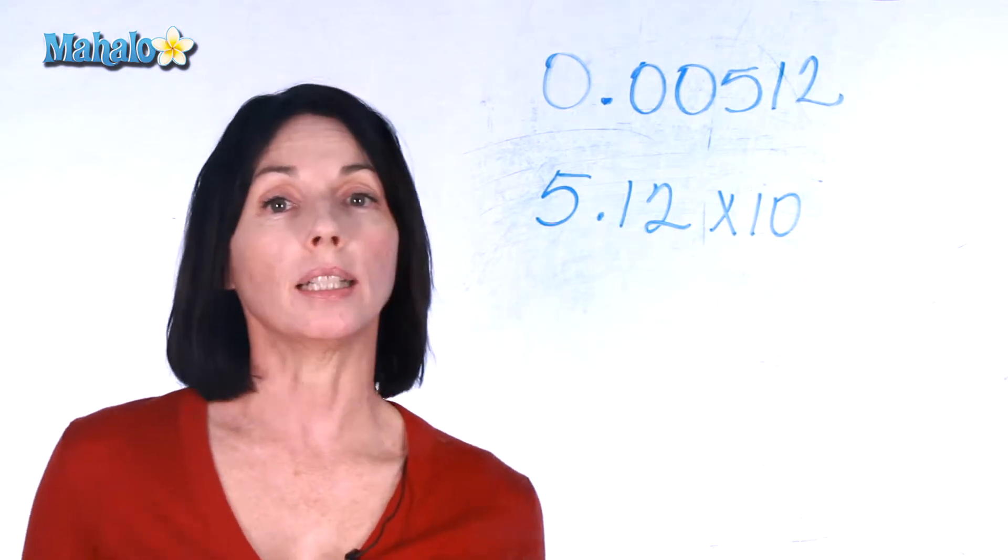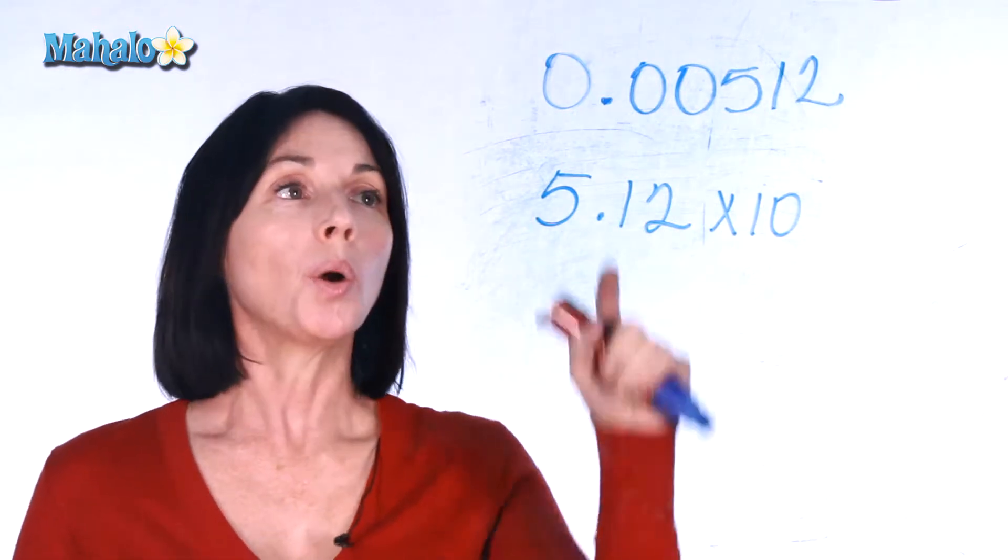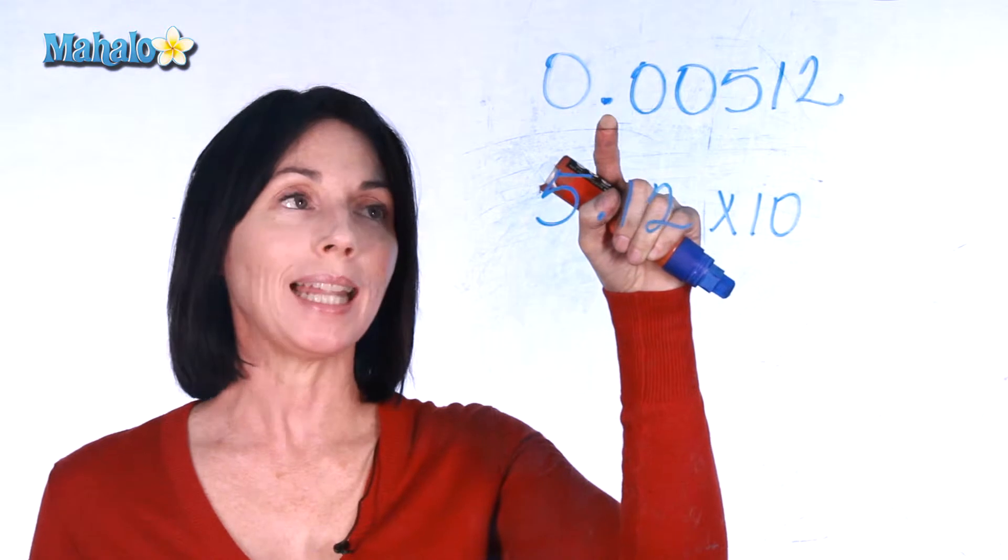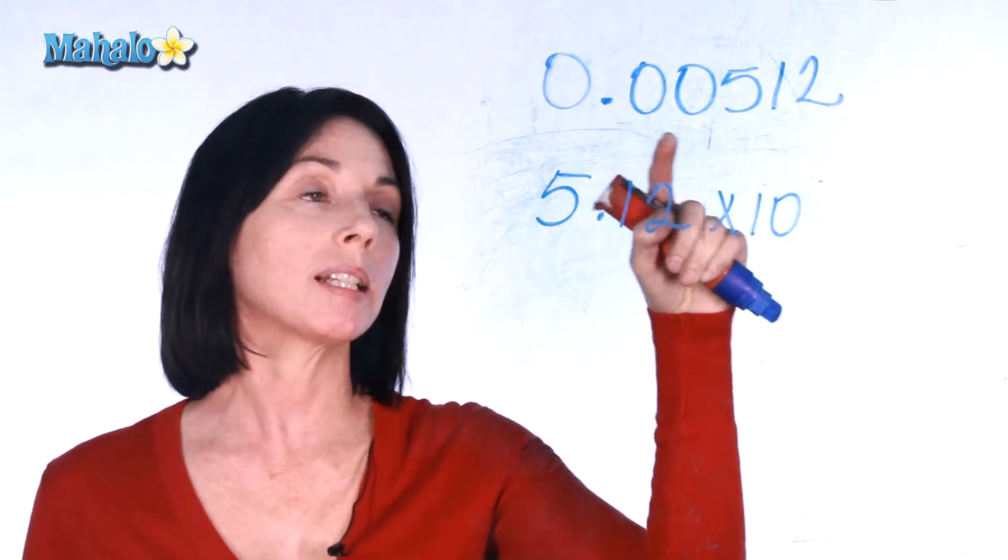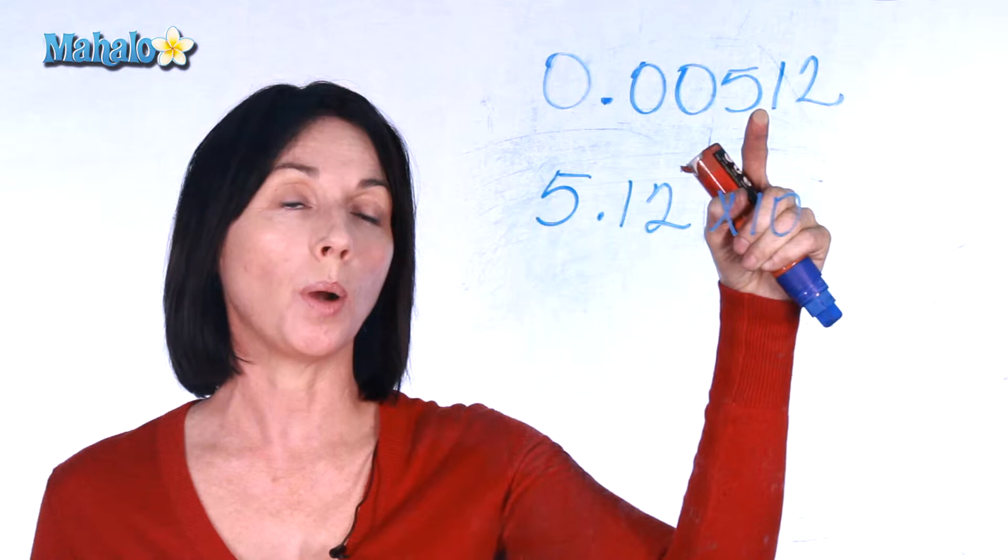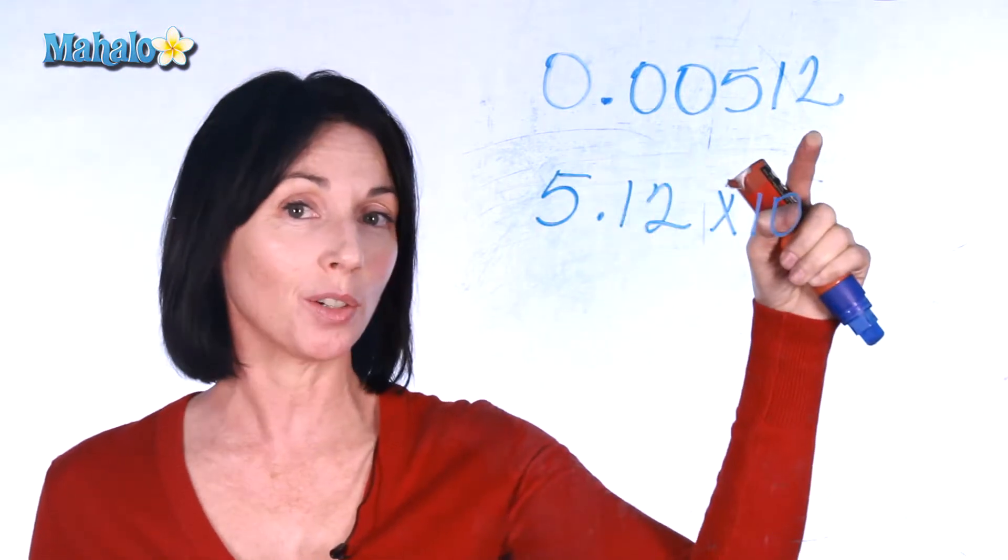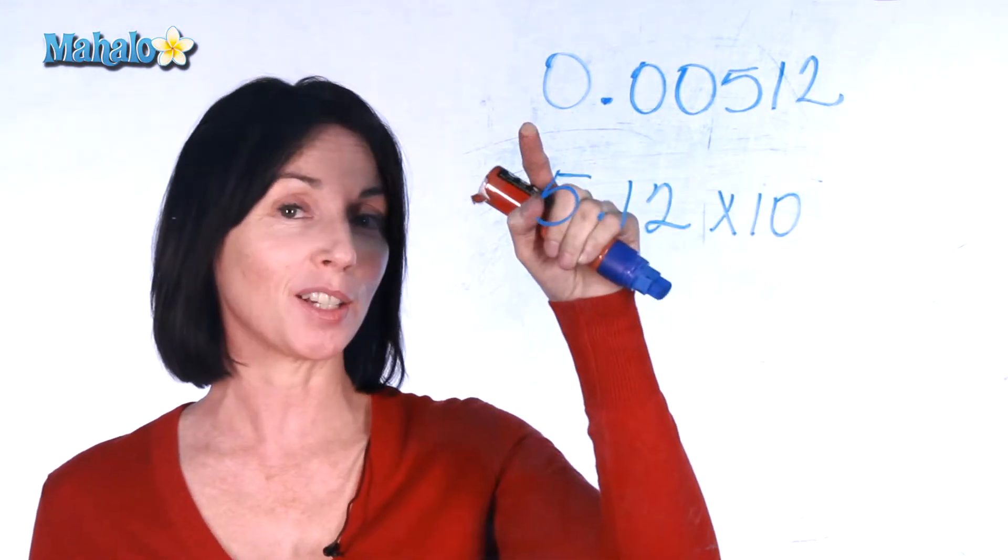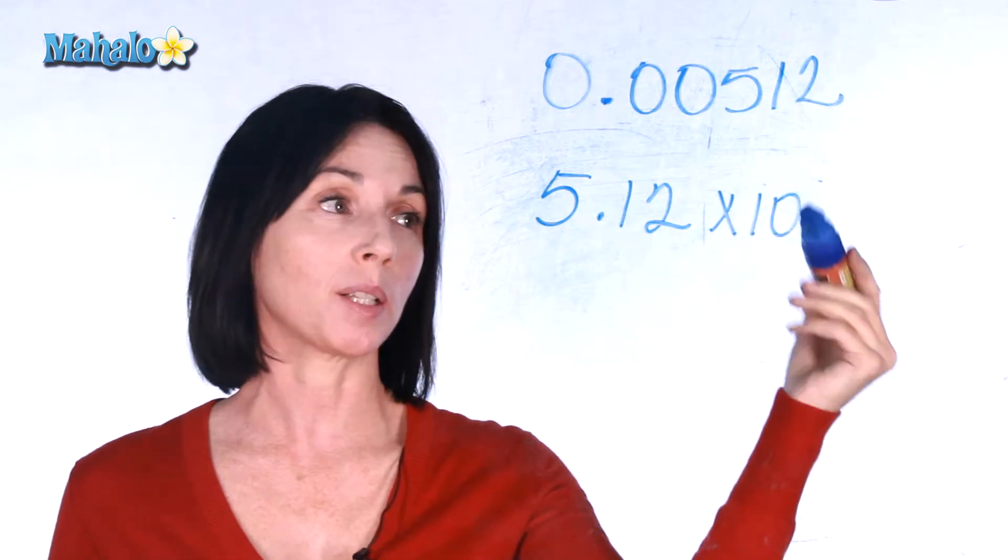Well, similarly to the way we did it with our whole number, we start at the decimal point and figure out how many places we had to move to get to 5.12. But because we're moving in this direction instead of this direction, we're going to get a negative exponent.